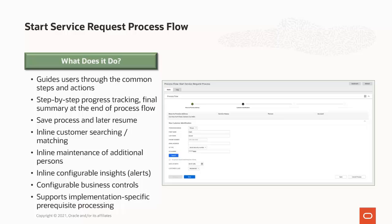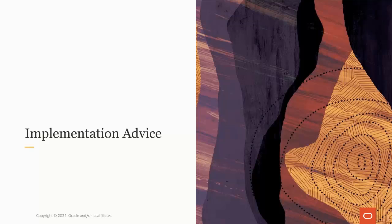For further details about using this new capability, please refer to the using Start Service Request Process Flow video. The new capability is an alternative option for processing start service requests rather than using the existing start stop transaction. In this implementation advice section we will go through what you need to consider to enable the Start Service Request Process Flow capability in your business.